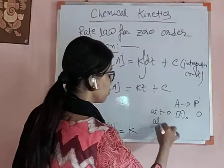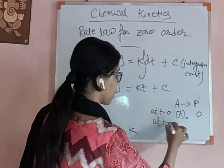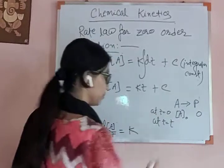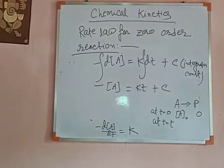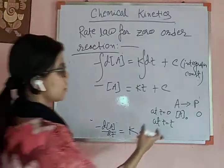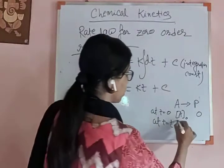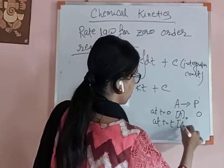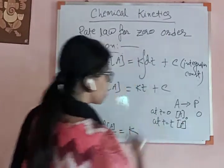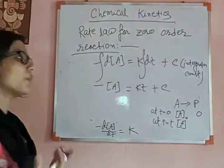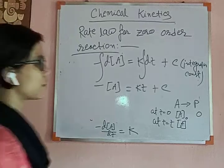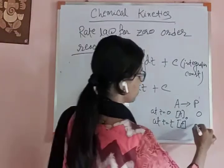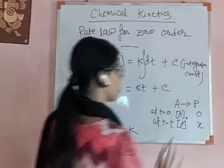At T equal to T — after some time, suppose 10 minutes — the reactant concentration becomes A and some amount of product has been produced, suppose the product produced is X.